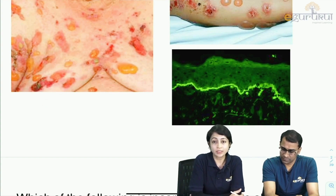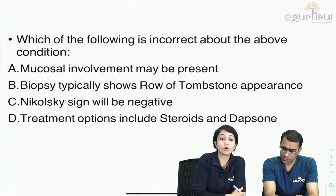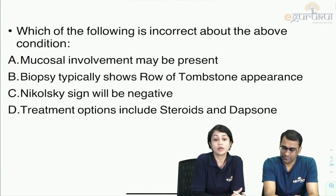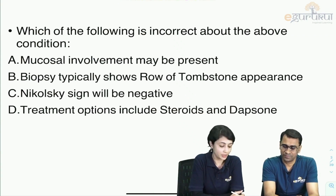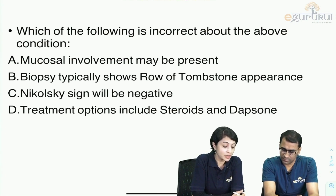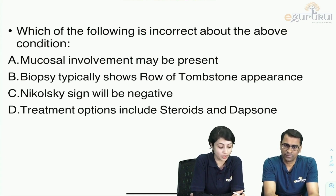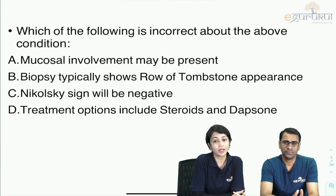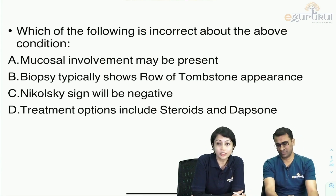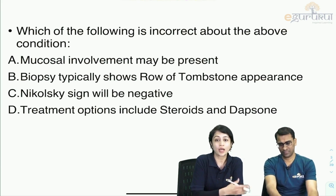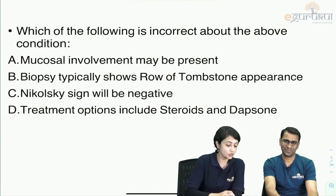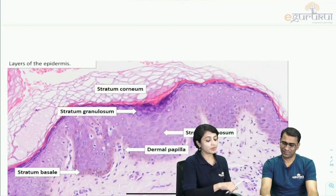Based on the clinical image and DIF image, you have to identify the incorrect option from the following: mucosal involvement may be present; biopsy typically shows a 'row of tombstones' appearance; Nikolsky sign will be negative; and treatment options include steroids and Dapsone. We are discussing blistering disorders, and Dr. Praveen will now cover the basic histopathology.